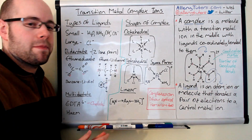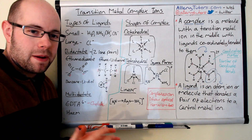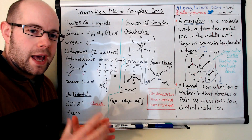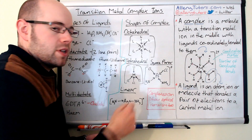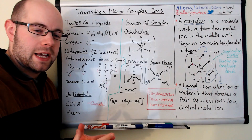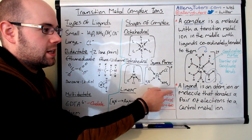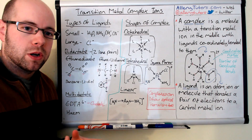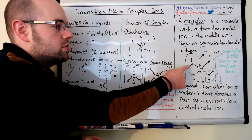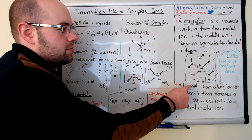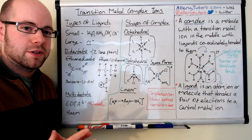I've drawn an example of a complex — I've kept it quite generic, with M in the middle to represent the metal, surrounded by six water ligands. A ligand is basically an atom, ion, or molecule that will donate a lone pair of electrons to the metal ion in the middle. Water is an example of a ligand, and we'll look at the types of ligands in a minute.